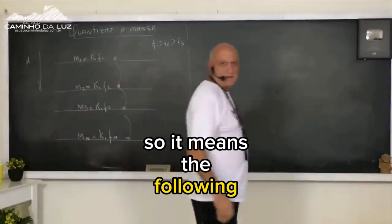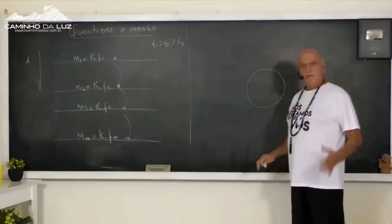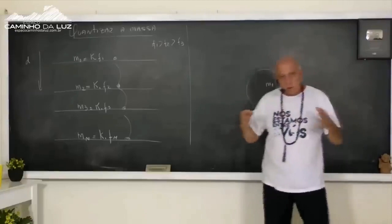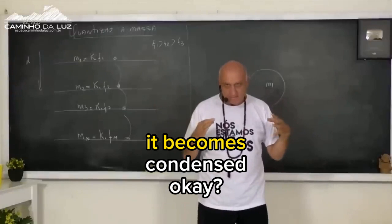So it means the following. If I take a planet, like planet Earth for example, it will be composed of mass M1 with characteristics M1. M1 is very dense. Since it is very dense, being the highest density, it all goes to the center first and becomes condensed.